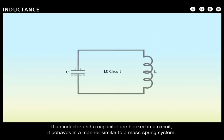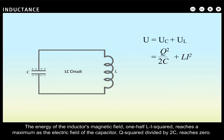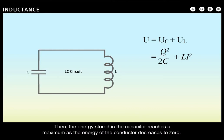If an inductor and a capacitor are hooked in a circuit, it behaves in a manner similar to a mass-spring system. The energy of the inductor's magnetic field, one-half L I squared, reaches a maximum as the electric field of the capacitor, Q squared divided by 2C, reaches zero. Then the energy stored in the capacitor reaches a maximum as the energy of the inductor decreases to zero.